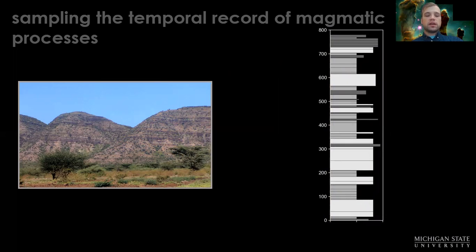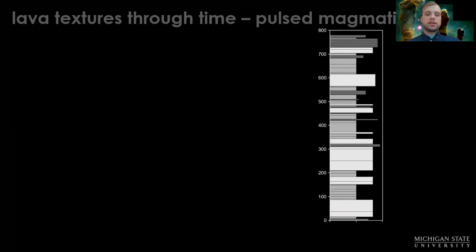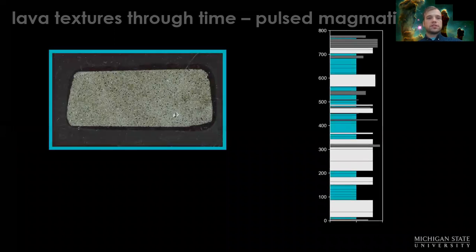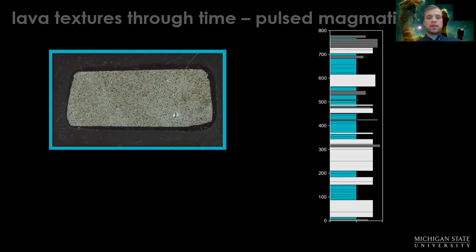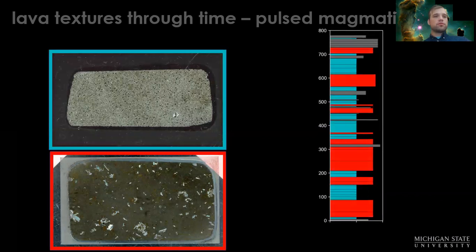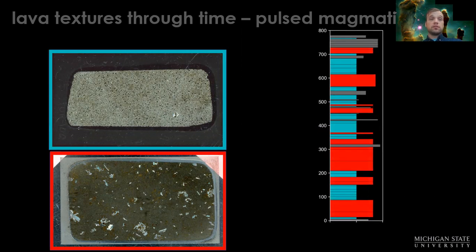When we closely examine the lavas from this section, we find that the lava textures occur in basically two styles. We have a group of lavas that are dominantly apheric—they don't have a lot of big crystals in them. We have a second grouping which is porphyritic or crystal-rich, and the main mineral we see is plagioclase.